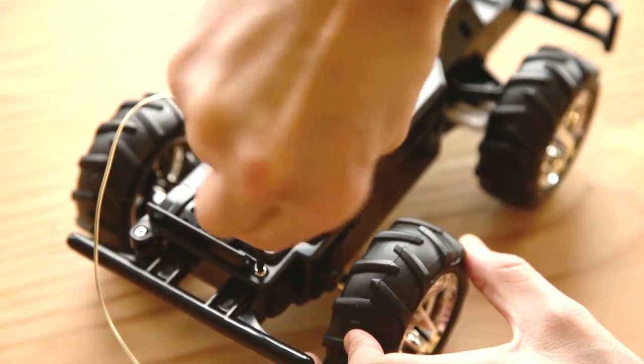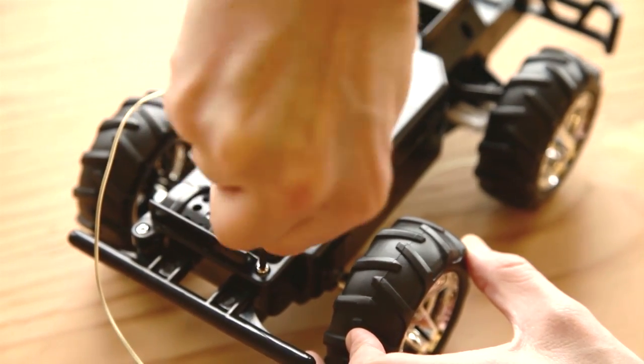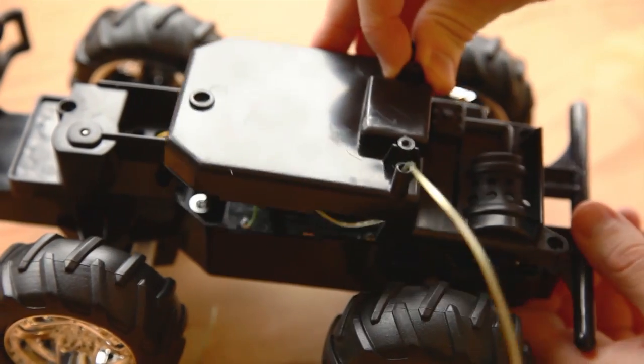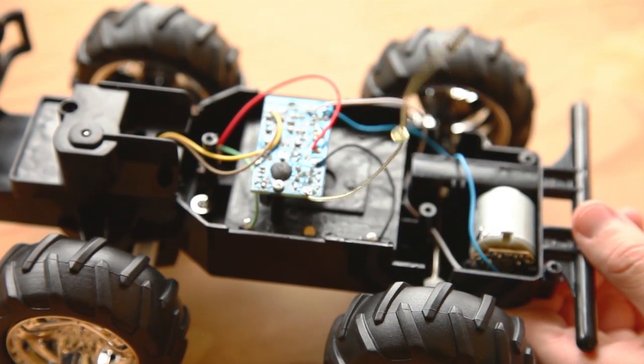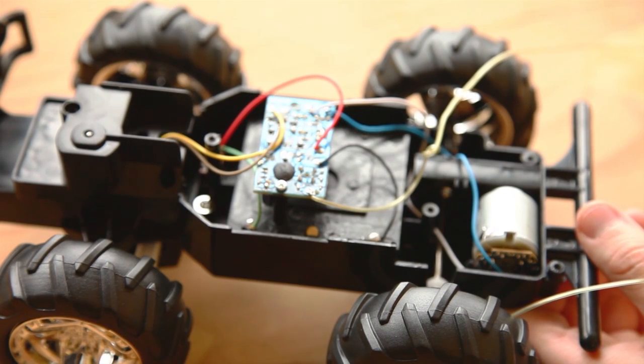Next, open the electronics compartment by removing the four screws and lifting the plastic cover gently up and off. The antenna, which is threaded through a hole in the cover, will slip out the bottom as you do this.